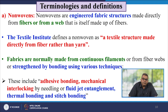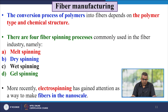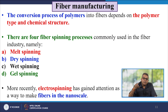The conversion process of polymers into fibre depends on the polymer type and chemical structure. There are four types of fibre spinning processes commonly used: melt spinning, dry spinning, wet spinning, and gel spinning. More recently, electrospinning has gained more and more impetus as a way to make fibres at the nano scale.